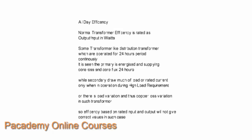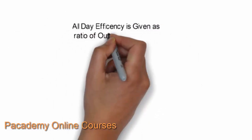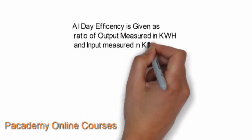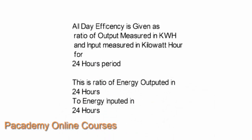To find out the efficiency of such transformers accurately, the all-day efficiency method is used. All-day efficiency is given as the ratio of output measured in kilowatt-hours to input measured in kilowatt-hours. The output energy and input energy of the transformer during 24 hours are taken, and their ratio gives the efficiency of the transformer. This is the ratio of energy output to energy input over 24 hours, and is how efficiency is found mainly for distribution transformers.